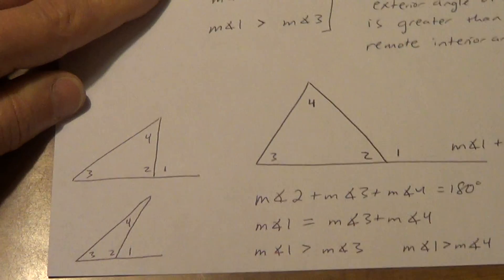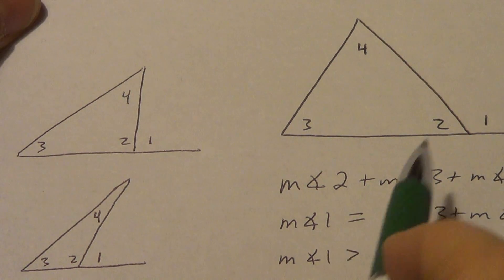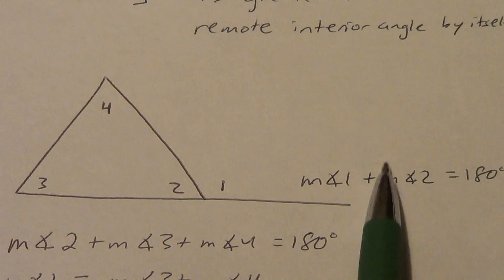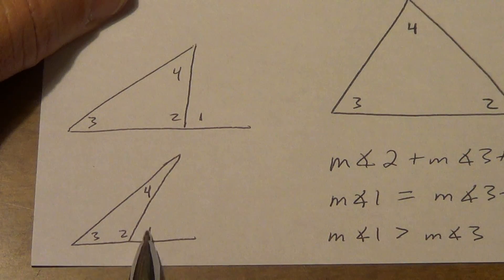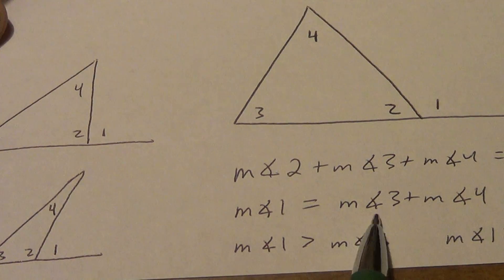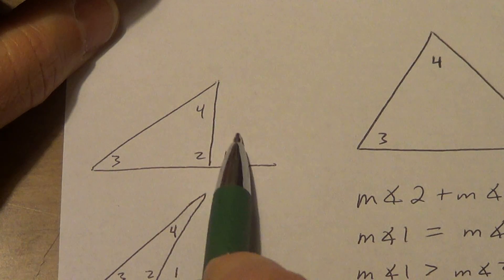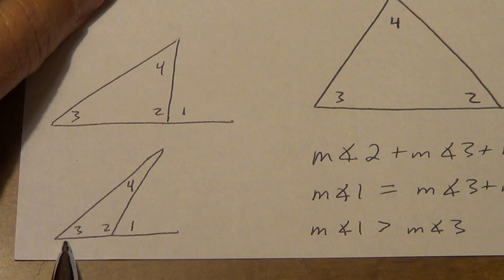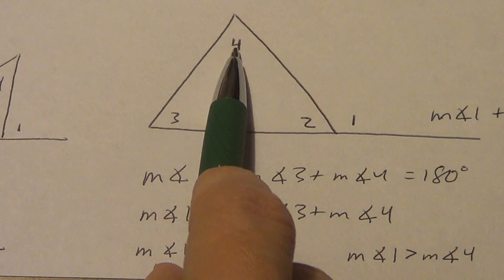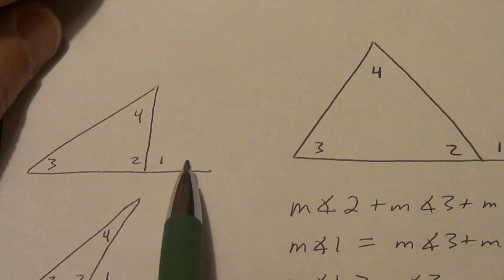We could have something where one, two, three, and four are in different positions — any of these three triangle orientations, whether angle one looks obtuse, like a right angle, or more acute, it doesn't matter. All five relationships hold: angle one and two equal 180 is true in every case; angle two, three, and four add to 180 is true in every case; angle one equals angle three plus four is true — adding the remote interior angles equals the exterior angle. And angle one is greater than angle three, and angle one is greater than angle four. Remember, it only works for the remote ones, not the adjacent one.